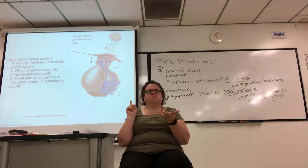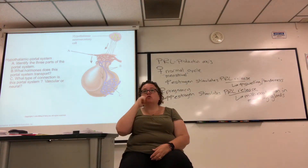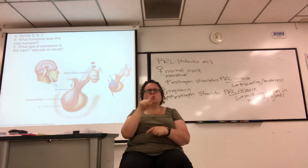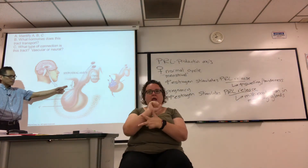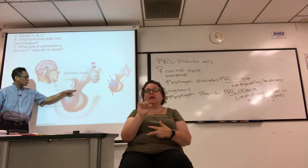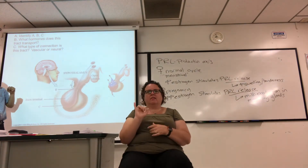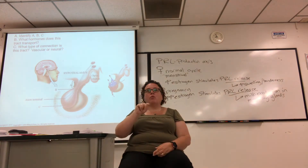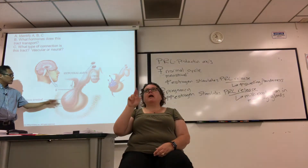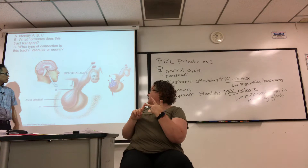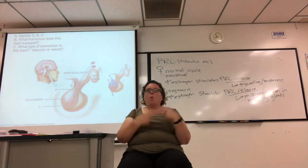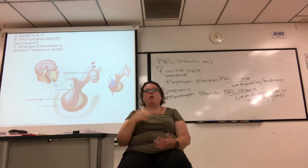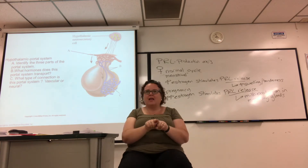For the posterior pituitary picture, identify: A = infundibulum or pituitary stalk, B = the hypothalamic-hypophyseal tract (the axons), and C = the posterior lobe. There's also the optic chiasm visible. There's a capillary bed to take the hormones into the bloodstream. The connection between hypothalamus and posterior pituitary is neural — a vascular connection is the portal system for the anterior pituitary.